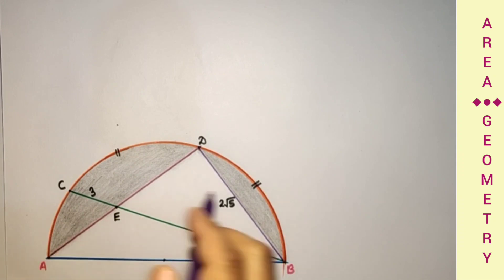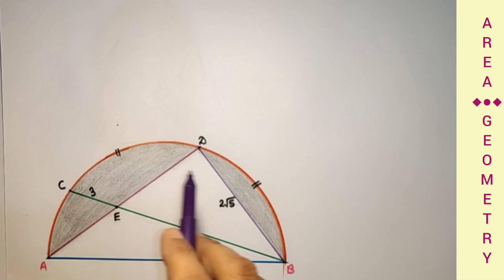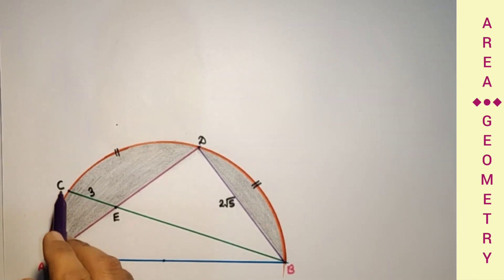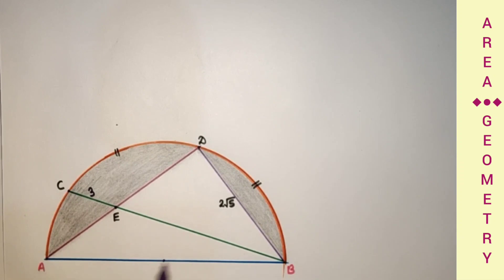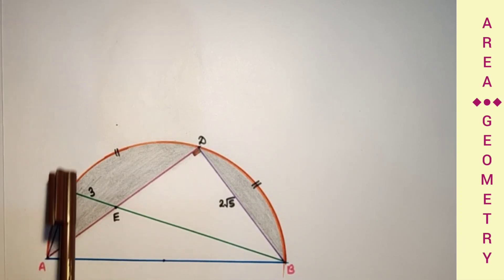We have to find the area of the shaded portion. We can find this area by subtracting the area of triangle ADB from the area of the semicircle. To do that we need the radius of the semicircle and the area of this triangle, for which we need AD or the height of the triangle with AB as base. If we join AC, angle ACB is 90 degrees because AB is the diameter and a diameter subtends a right angle at the circumference. Similarly, angle ADB is 90 degrees. We extend AC and BD.